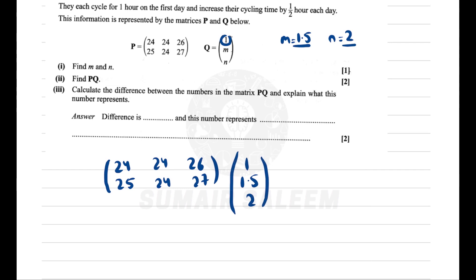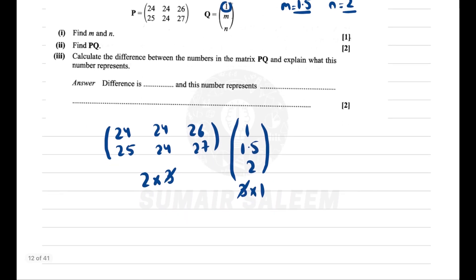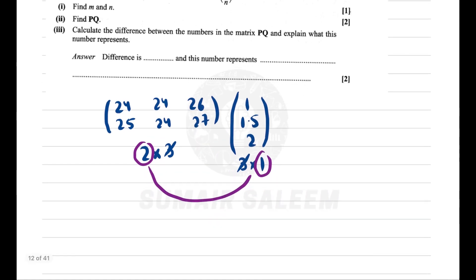Now check the order of this. The order is 2 by 3, and here the order is 3 by 1. Is the column of the first matrix and the rows of the second matrix the same? Yes. In that case, make a smiley face. This means the order of the answer will be 2 by 1.